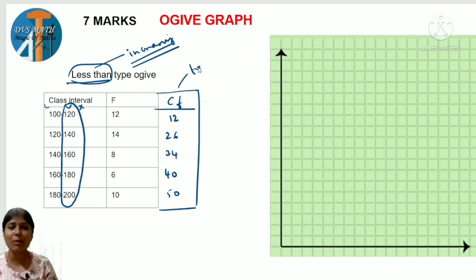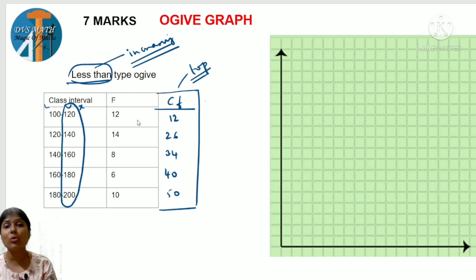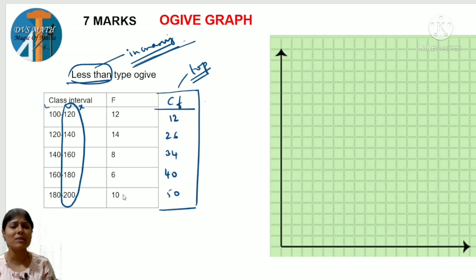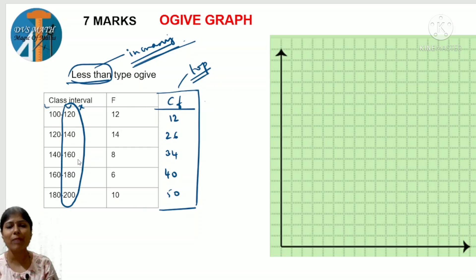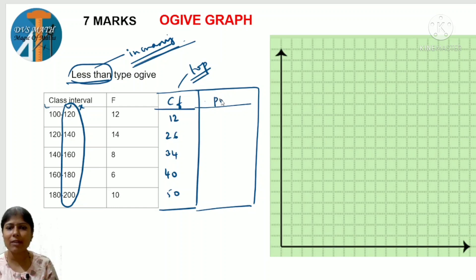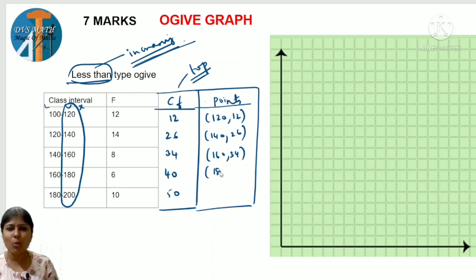For less than type ogive, we consider the upper limit for x-axis. As we add CF from top, it will be in increasing order. The last number in CF should match the total given in the question - like 50 students, 40 students. Now for plotting: points are upper limit comma CF. So the points are: 120 comma 12, 140 comma 26, 160 comma 34, 180 comma 40, 200 comma 50.